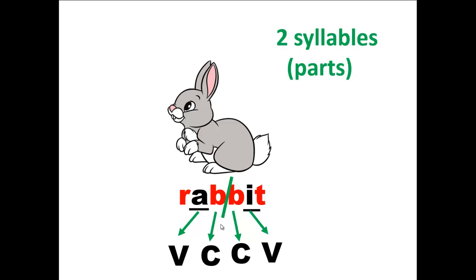So the first syllable would be 'rab' while the second syllable would be 'bit.' So it's going to be rab-bit.